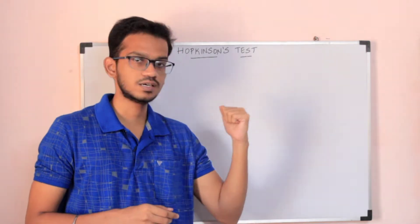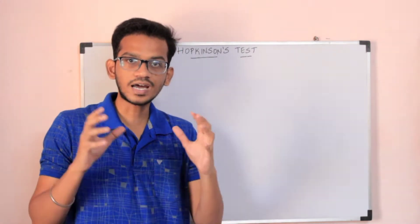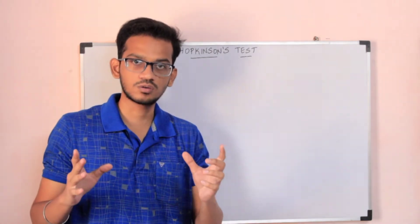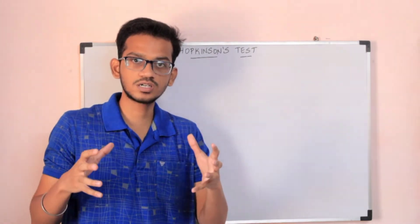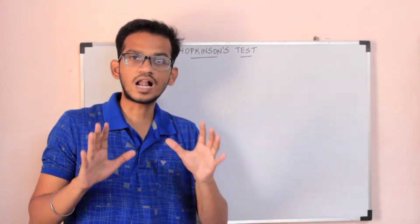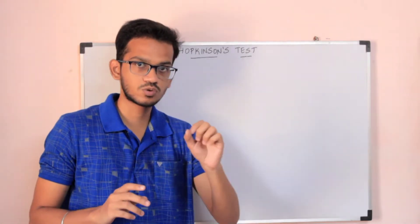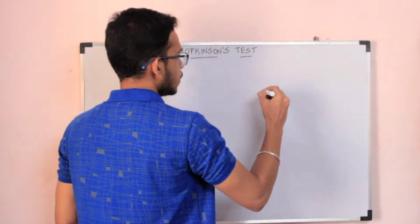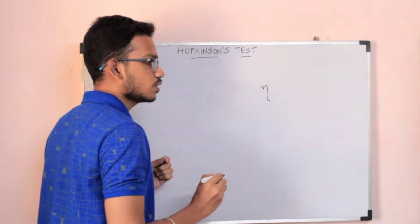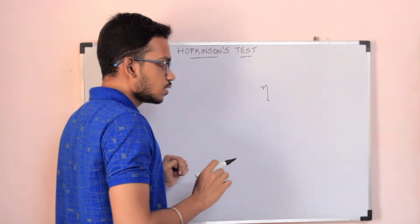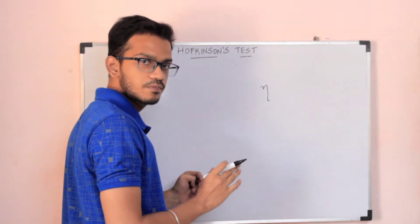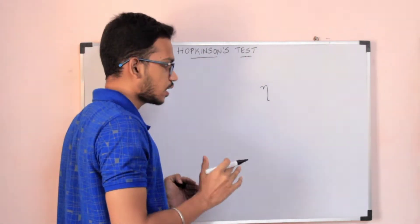In the Hopkinson's Test, we basically use two identical shunt machines. The field winding is in the shunt orientation. The shunt machine gives the efficiency. This is the fundamental aim of Hopkinson's Test.